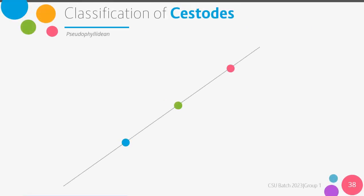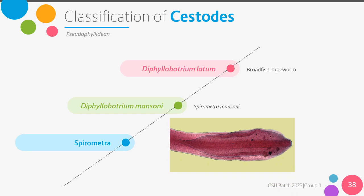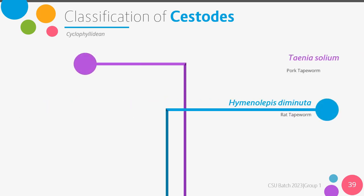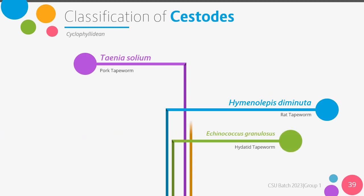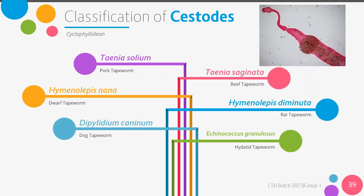Pseudophyllidean and cyclophyllidean are the most important cestode parasites of humans and domesticated animals. All have multiple proglottids or segments and all have four suckers on their scolex, though some may have other structures as well. Pseudophyllidean cestodes can be classified into: Diphyllobothrium latum or broadfish tapeworm, Diphyllobothrium mansoni or Spirometra mansoni, and Spirometra. The classification of cyclophyllidean cestodes includes: Taenia solium, the pork tapeworm; Taenia saginata, the beef tapeworm; Hymenolepis nana, the dwarf tapeworm; Hymenolepis diminuta, the rat tapeworm; Dipylidium caninum, the dog tapeworm; and Echinococcus granulosus, the hydatid tapeworm.